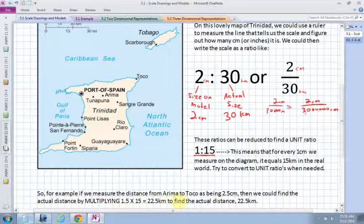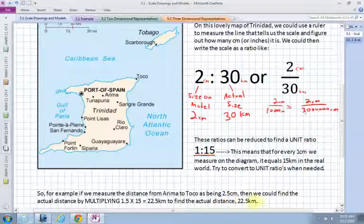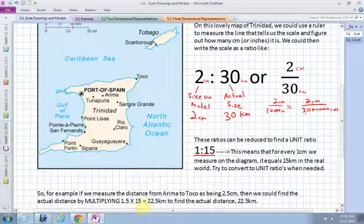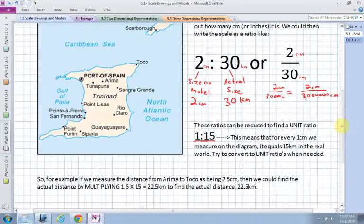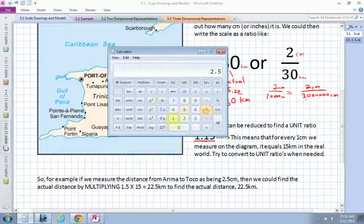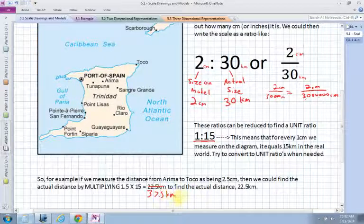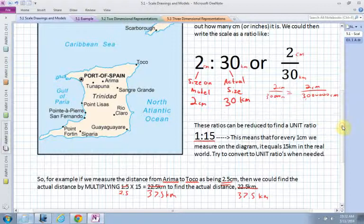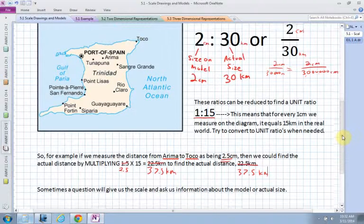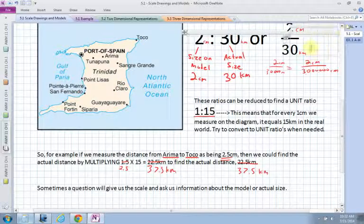Like I say down here, for the example, if we measure the distance from Erema to Toko as being 2.5 centimeters, then we could find the actual distance by multiplying by 15. So I have 2.5 times 15, which is 37.5. So this is actually wrong, it should be 37.5 kilometers. Because I took my value of 2.5 centimeters times it by 15, because for every 1 centimeter it's going 15 kilometers. So that means I'm going 37.5 kilometers. Just make sure that if the units are different and you're measuring in centimeters, then you're going to be multiplying by a value that's in kilometers. It does still work because your ratio can be different units and it often is.